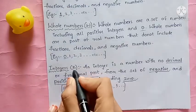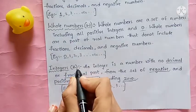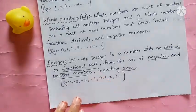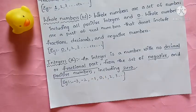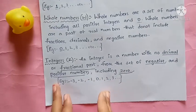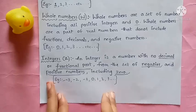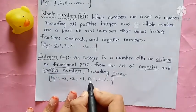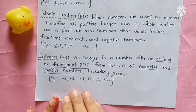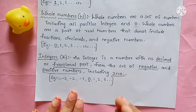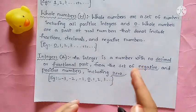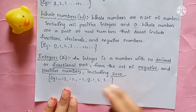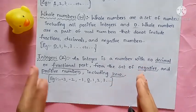Integers are denoted with Z. One important thing to remember: 0 is neither positive nor negative — it is the midpoint between the negative and positive sides on the number line.